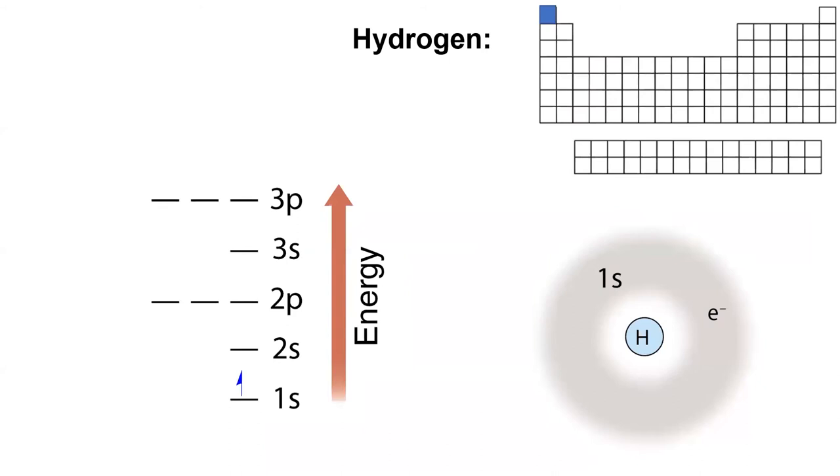The element we'll start with will be the first element on the table, hydrogen. Neutral hydrogen has one electron placed in a 1s orbital, which we indicate using an arrow.